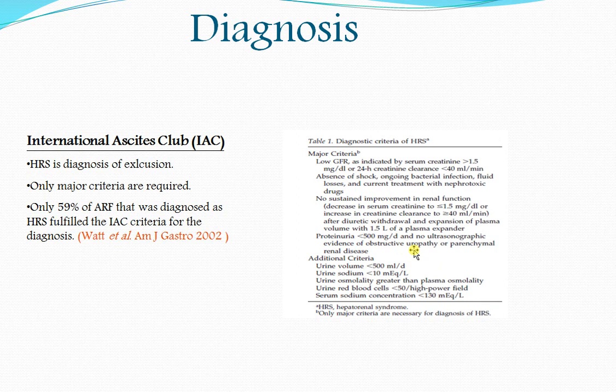Additional diagnostic criteria include oliguria, low urine sodium — with differentials including HRS, contrast nephropathy, pre-renal azotemia, and glomerulonephritis — urine osmolality greater than plasma osmolality, no hematuria, and serum sodium less than 130. HRS is a diagnosis of exclusion. In one study applying IAC criteria, only roughly 60% of patients with acute renal failure and HRS qualified under these criteria.